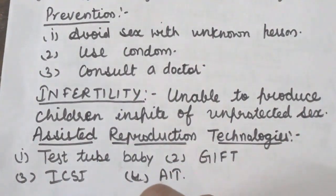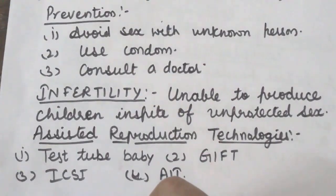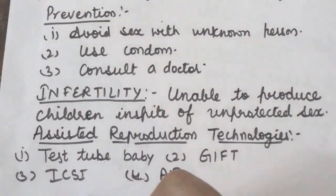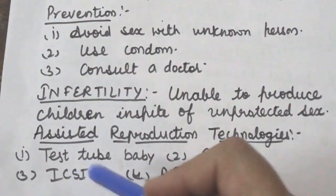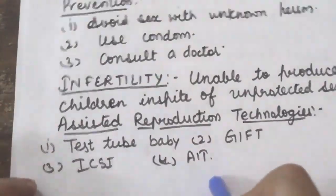Next is ICSI — Intracytoplasmic Sperm Injection. This is another specialized technique to form an embryo in the laboratory, in which a sperm is directly injected into an ovum placed in a nutrient medium. The resulting zygote is then transferred by surgical method into the uterus of the female.